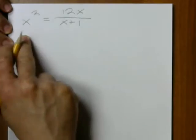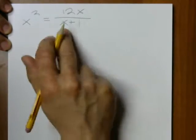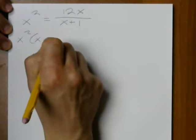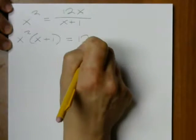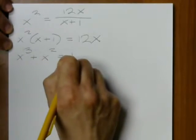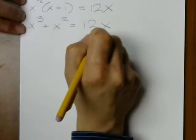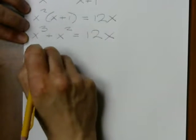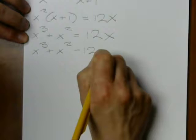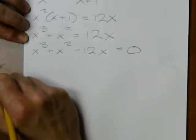So, let's just multiply by the expression x plus 1. This gives me the following: x cubed plus x squared minus 12x equals 0.